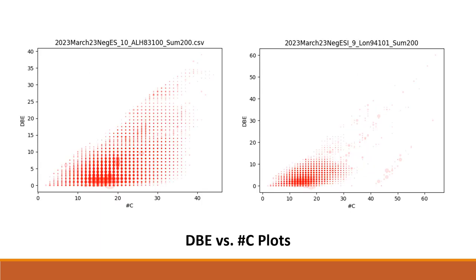The DBE, or double bond equivalent, versus the number of carbon plots allowed us to compare the degree of unsaturation in molecules found in the samples with their corresponding number of carbon atoms. The more unsaturated a molecule, the greater its DBE value, and the longer it is, the more carbon atoms are likely present in the molecule. This allows for patterns to emerge that can be used to determine whether or not the samples have a high concentration of different types of organic molecules based on molecule length and saturation.